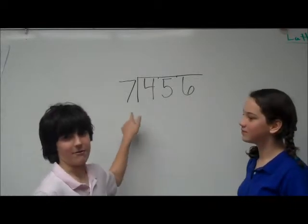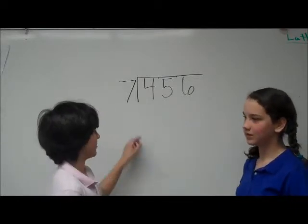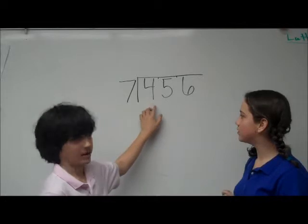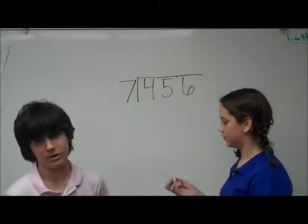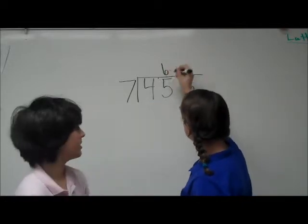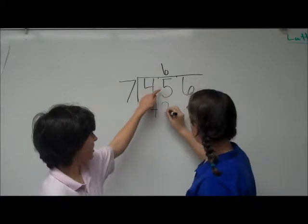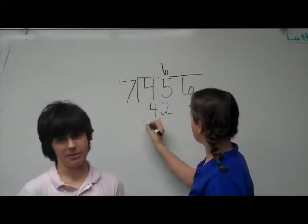First, we have to see if 7 can go into 4, which it can't. So 7 can go into 45, which it can 6 times. Now we have to put the 6 over the 5, because we brought the 5 into the equation.